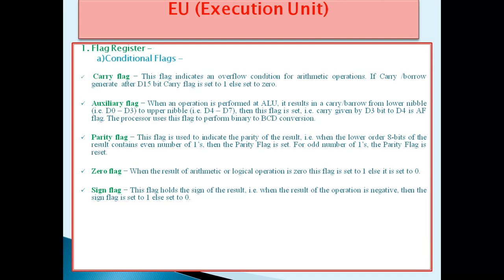The fifth flag is the Sign Flag. This flag holds the sign of the result — when the result of the operation is negative, the Sign Flag is set to 1, else set to 0. The sixth flag is the Overflow Flag. This flag represents the result when the system capacity is exceeded. This flag depends on the Carry Flag — the overflow condition will be 1 or 0 depending on that condition.